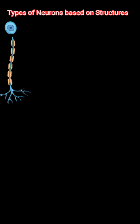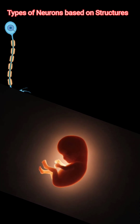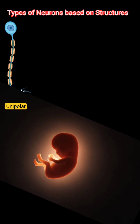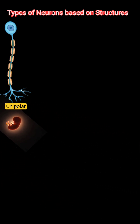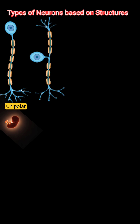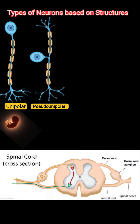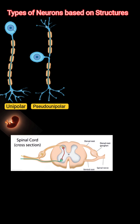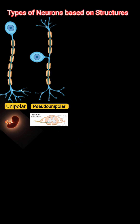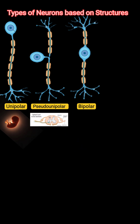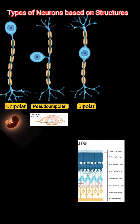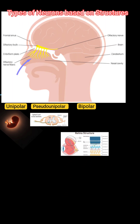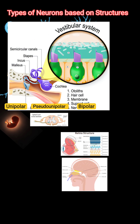Types of neurons based on structure: 1. Unipolar — only one process; rare in humans, mainly found in embryos. 2. Pseudo-unipolar — one process that divides into two branches; found in dorsal root ganglia and mainly sensory neurons. 3. Bipolar — one dendrite plus one axon; found in the retina, inner ear, and olfactory epithelium; involved in special senses.